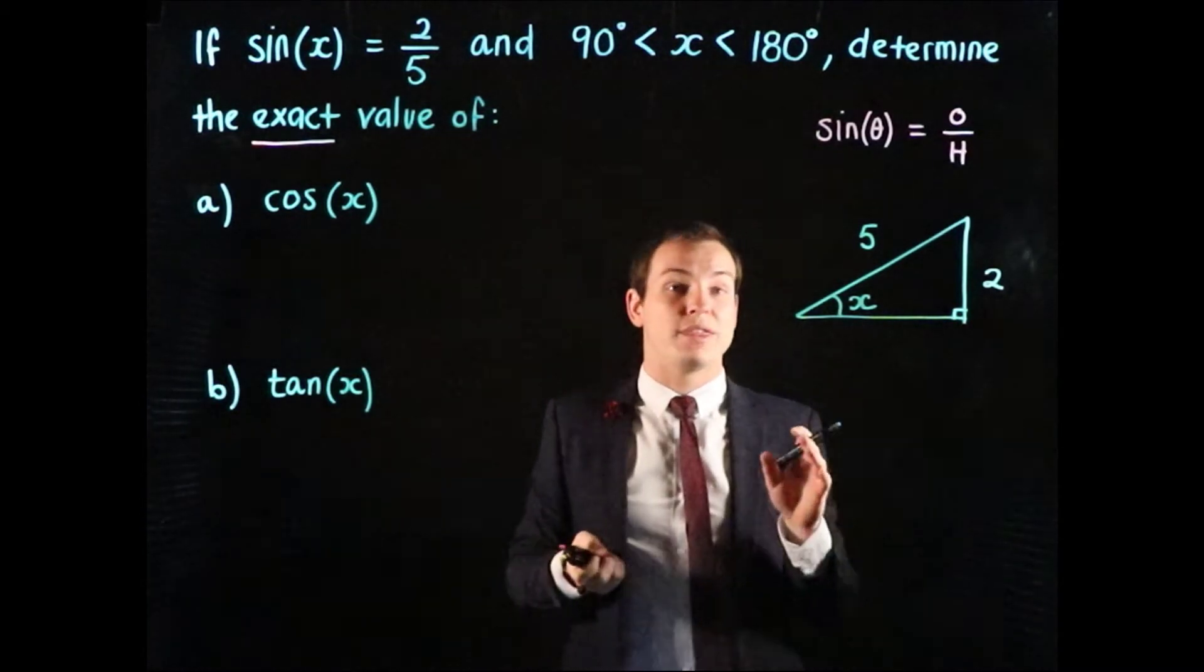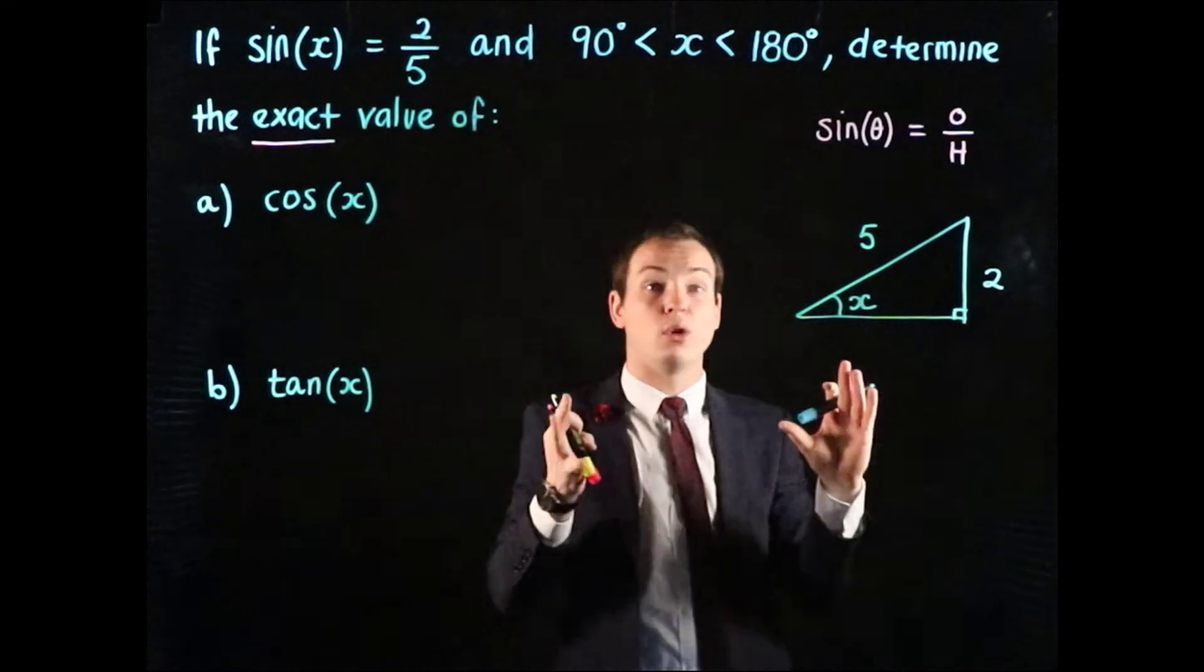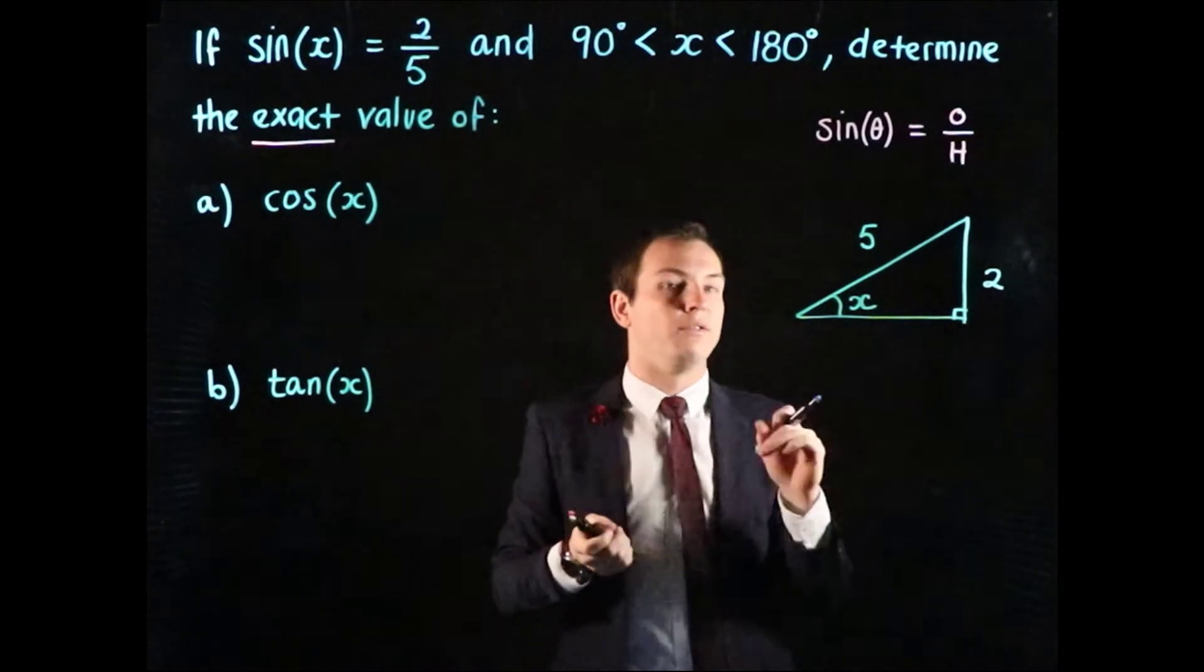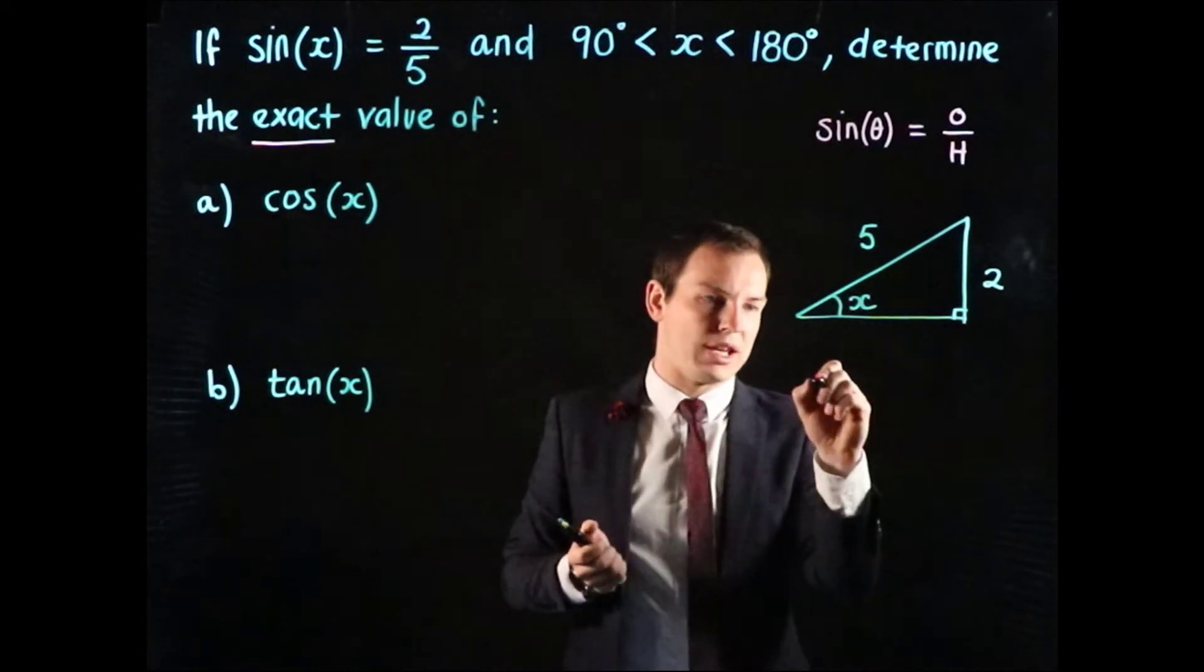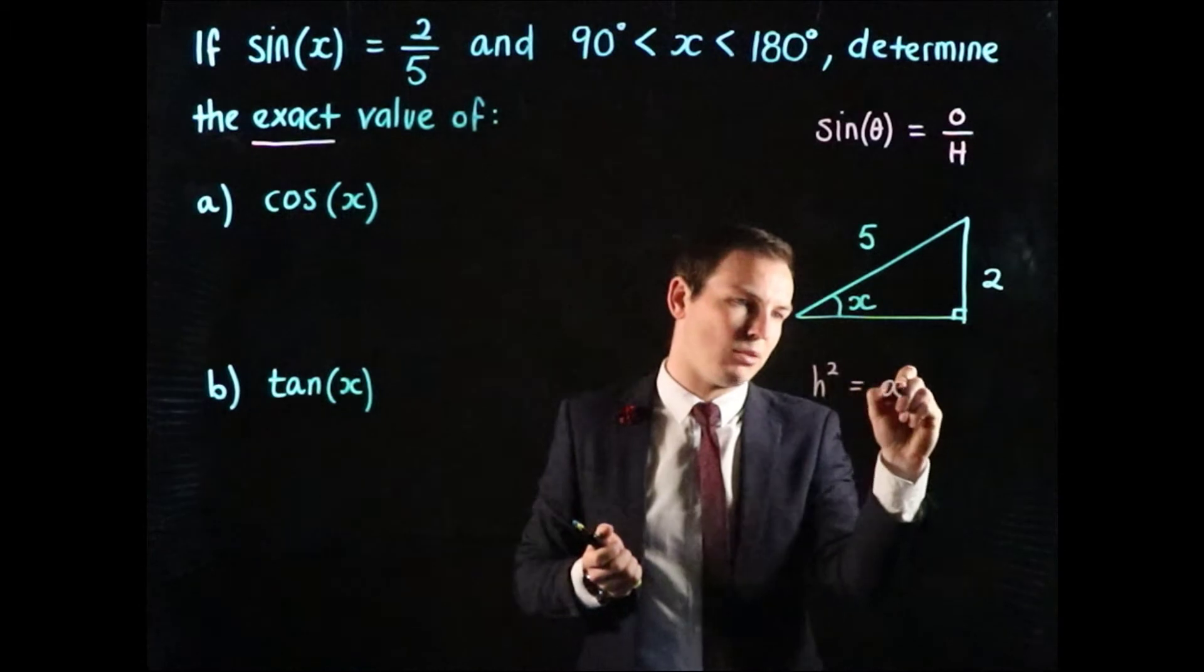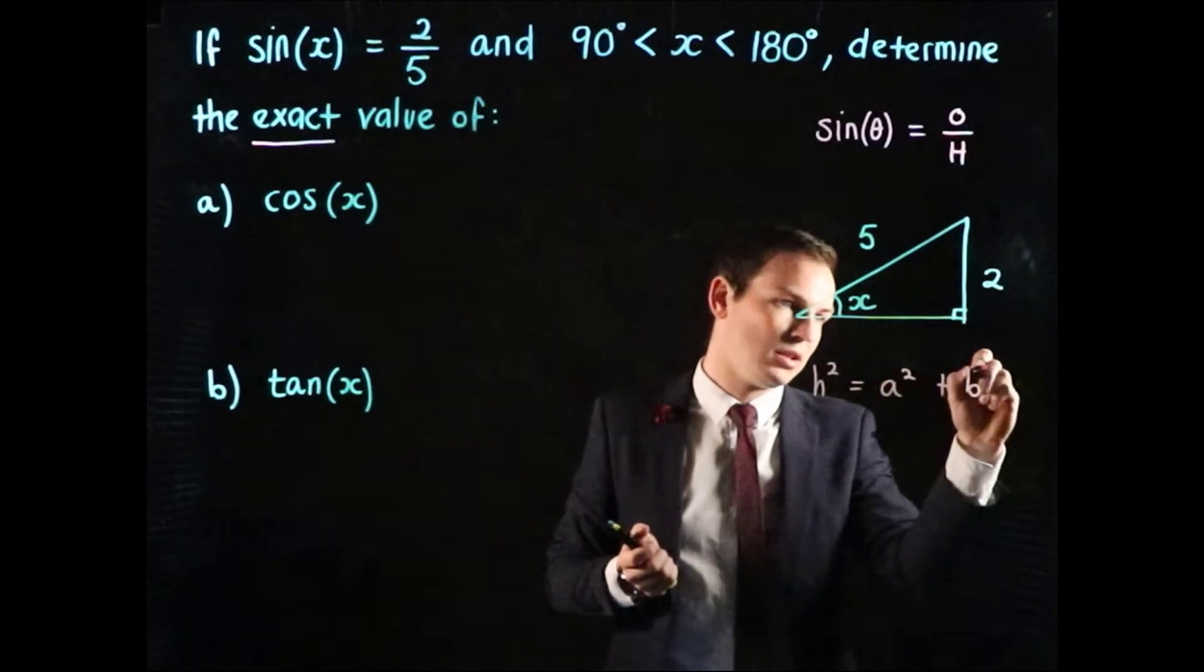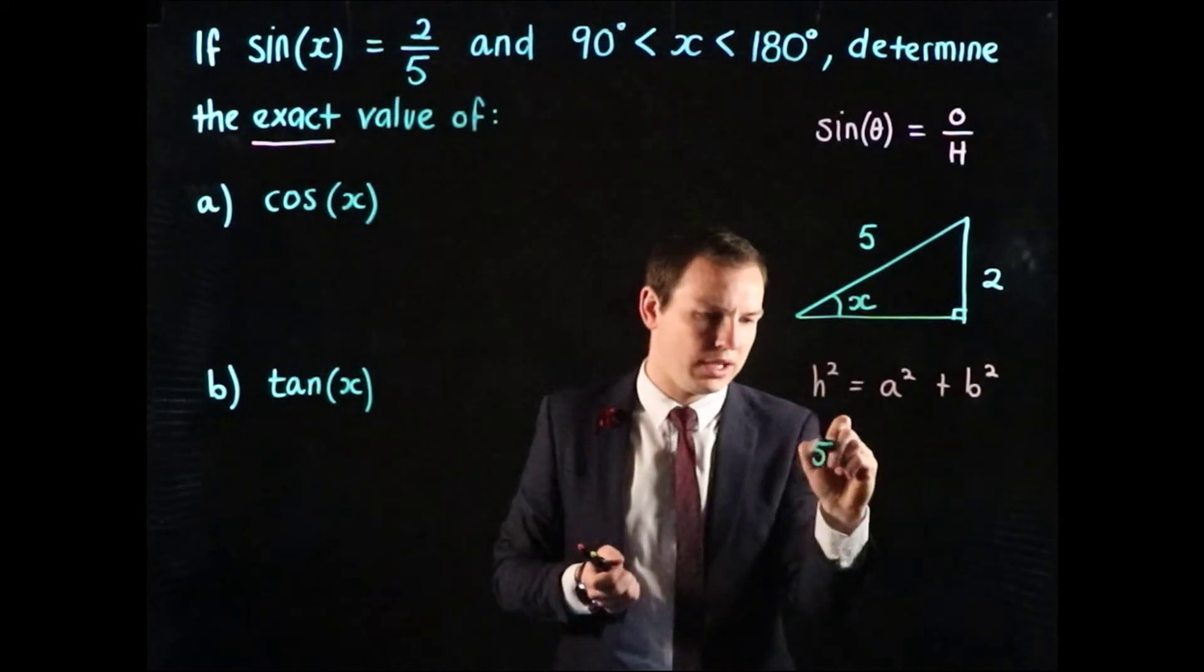Now we're going to use Pythagoras' theorem to find the unknown side length down the bottom so we know all three side lengths. Pythagoras' theorem says that h squared, the hypotenuse squared, is equal to a squared plus b squared. So we know that h squared is 5 squared.